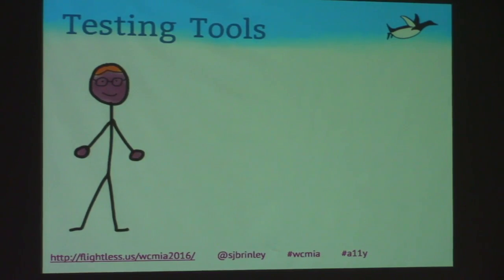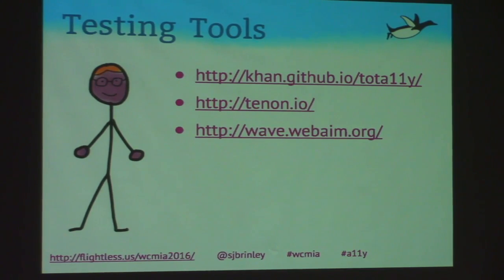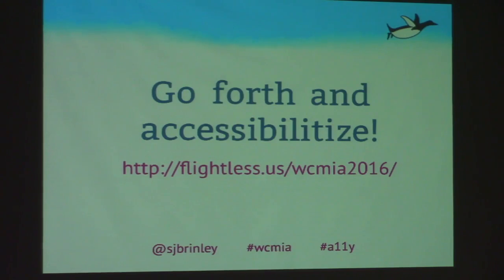Testing tools include Totally (a browser bookmarklet that shows big and small errors), Tenon.io (put in a URL and get a prioritized report of accessibility issues from most to least critical), and WAVE from WebAIM. One last time — the URL I've been sharing has lots of resource links. Go forth and accessibilitize!